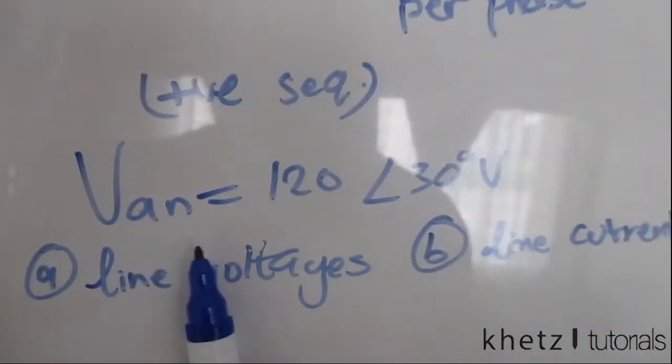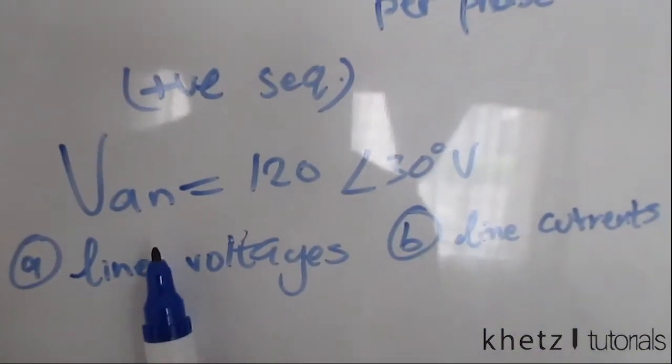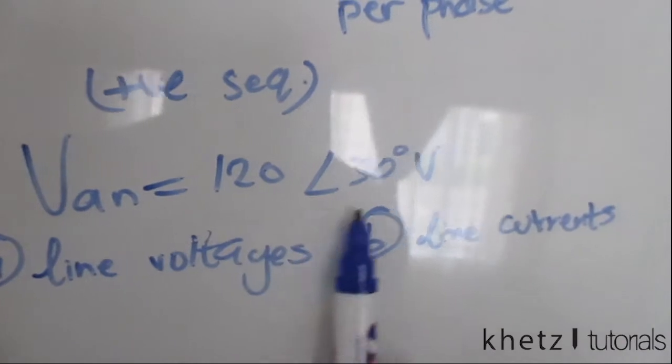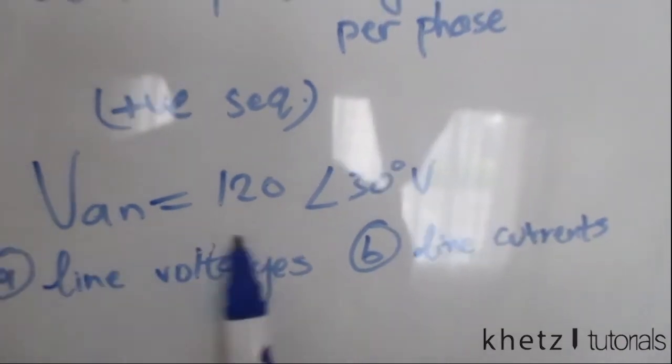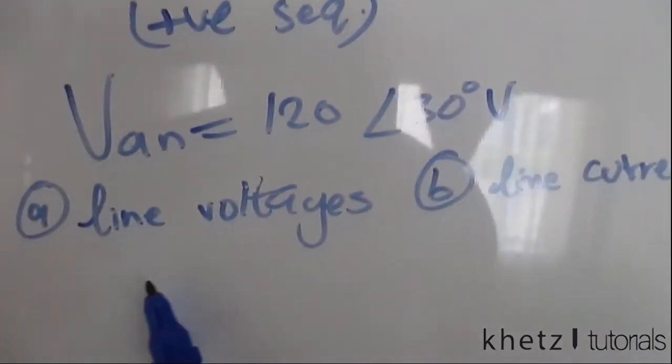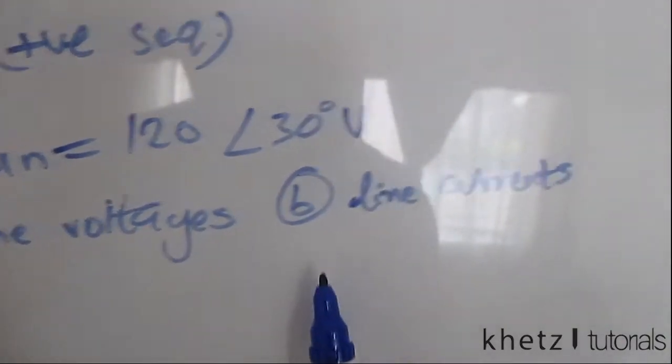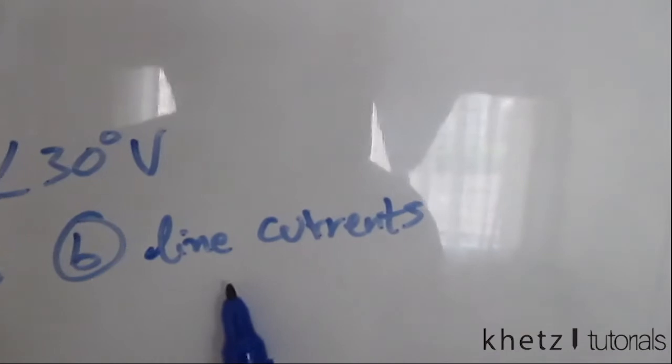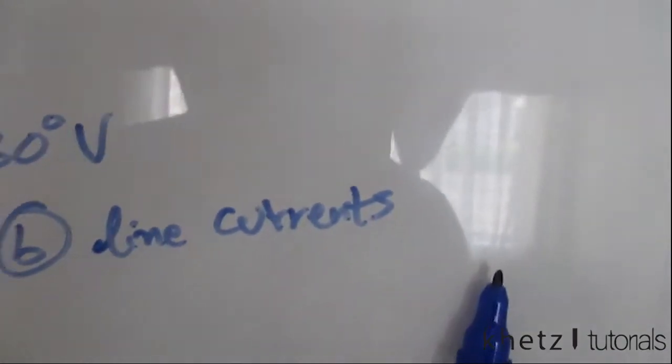We're given the value of one of the phase voltages and we are asked to find the line voltages and the line current.